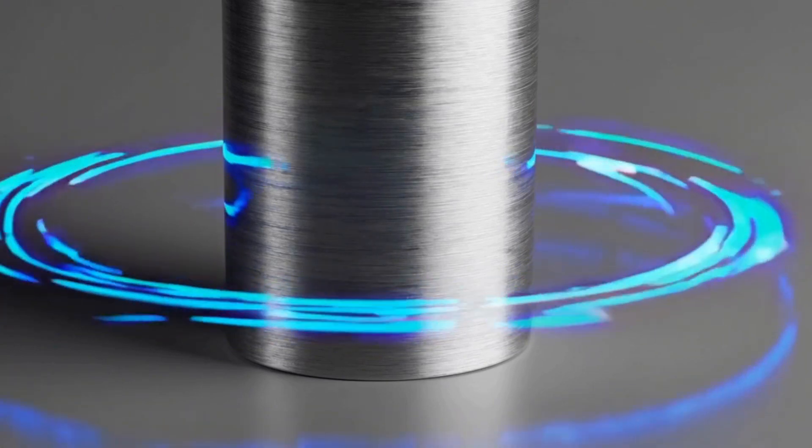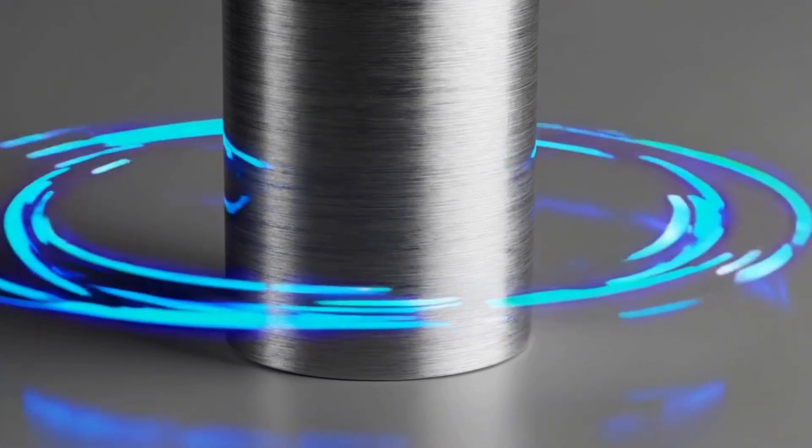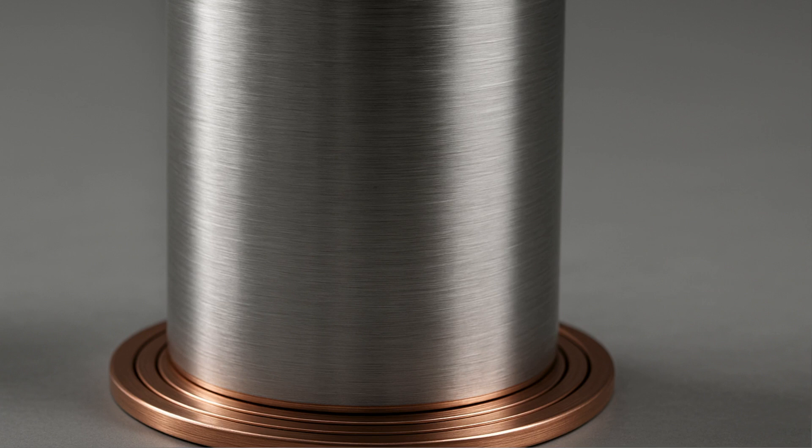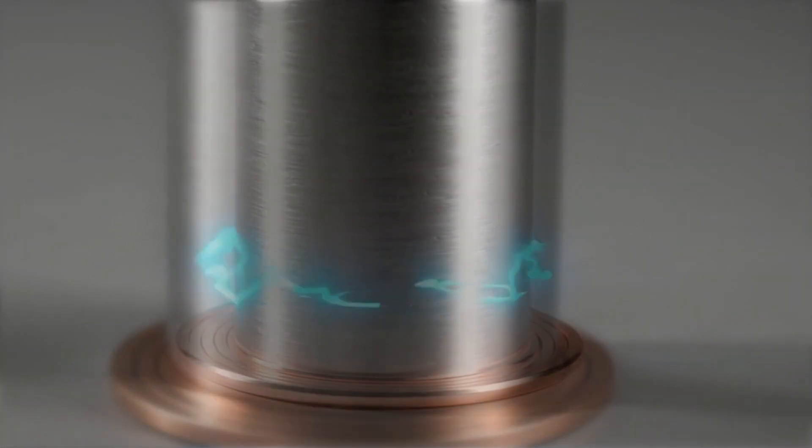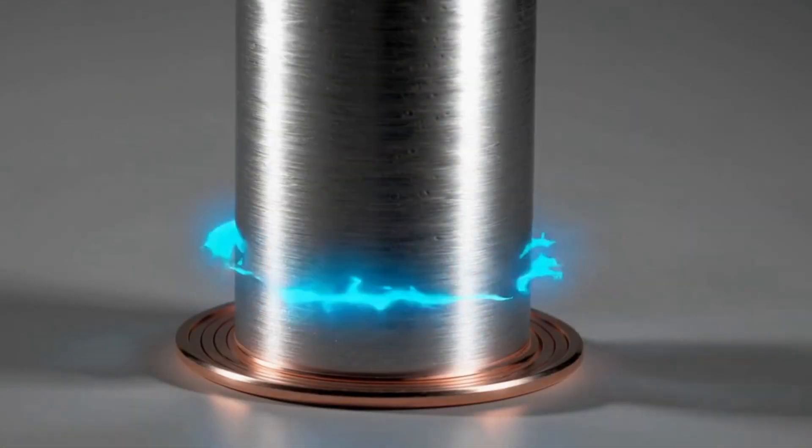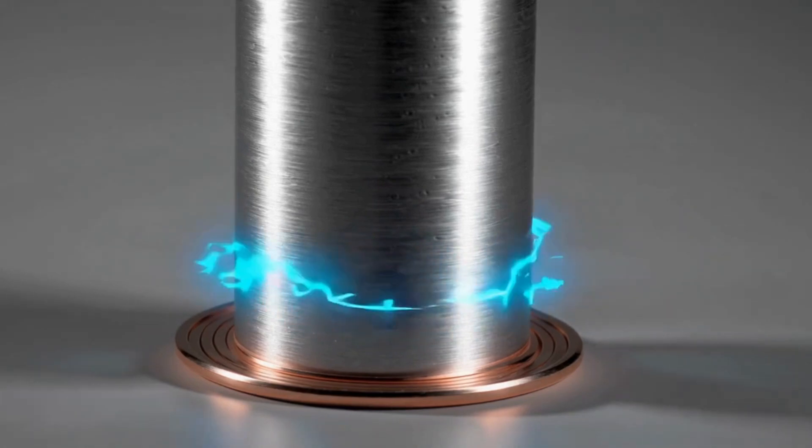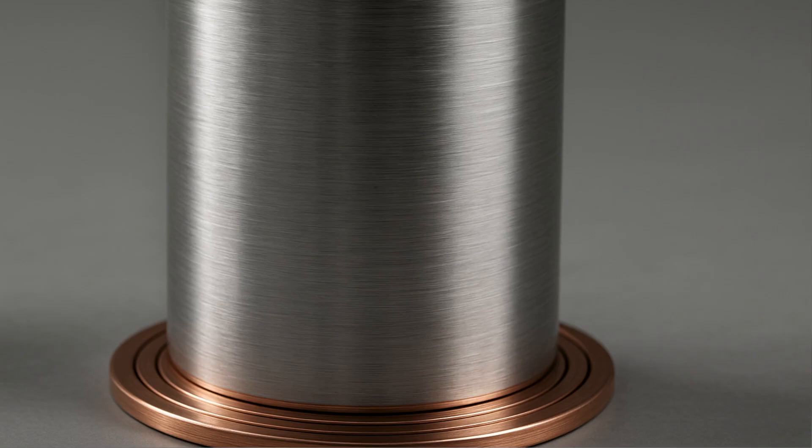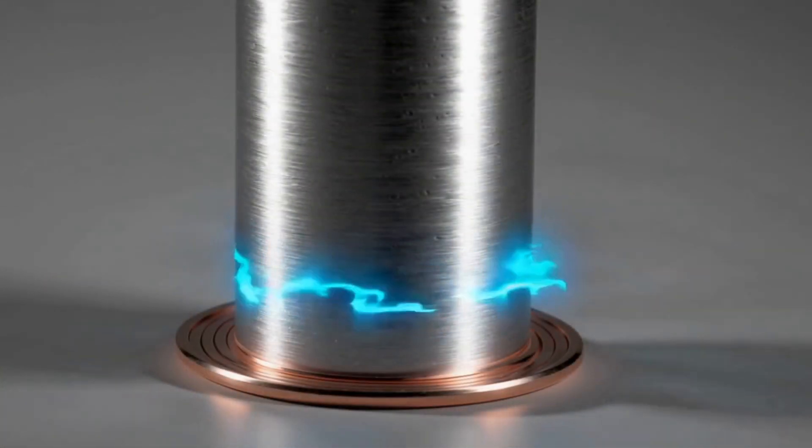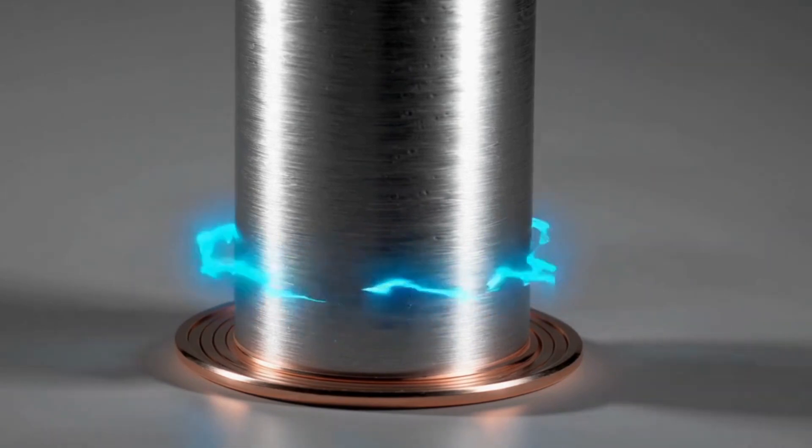At this point, the scientists wanted to explore whether the system could function without any external input signals. In other words, could the system still generate effects if no signal was sent into the coils? In this experiment, with no external current supply to the coils, they observed that, after a short while, an electromagnetic signal began to emerge spontaneously from within the coils.